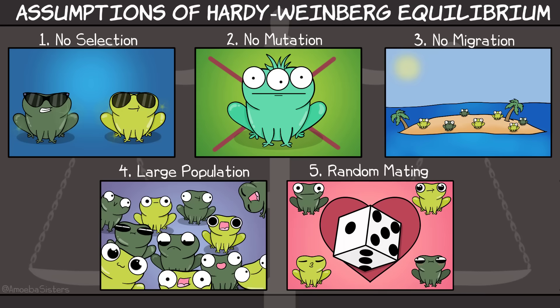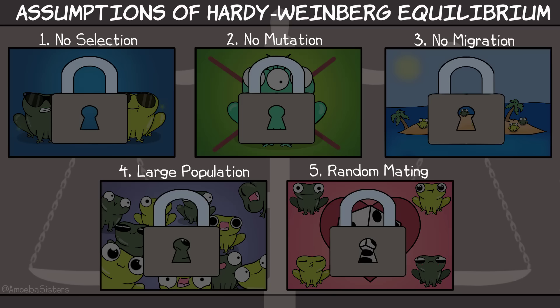Number five, random mating. The frogs mate without any specific choice. All of these five assumptions must be kept in order for Hardy-Weinberg equilibrium to happen.